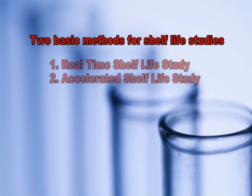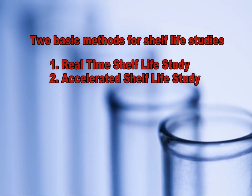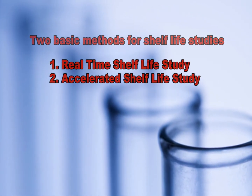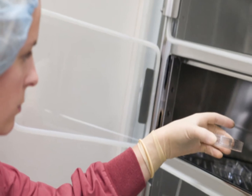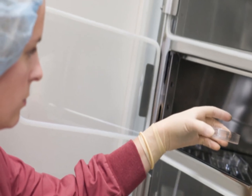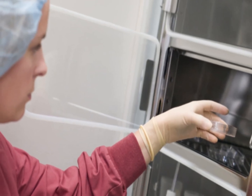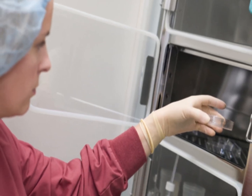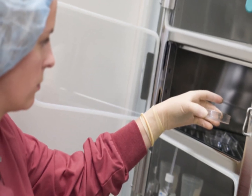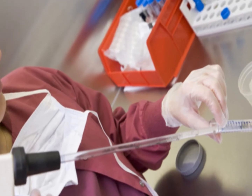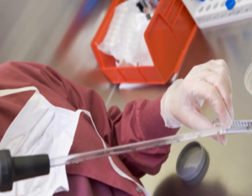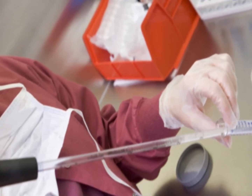There are two basic methods for performing shelf life studies: real-time and accelerated shelf life studies. Real-time studies store the product under the normal conditions of the product for a period of time greater than the expected shelf life. The product is checked at regular intervals to determine the point of product deterioration.